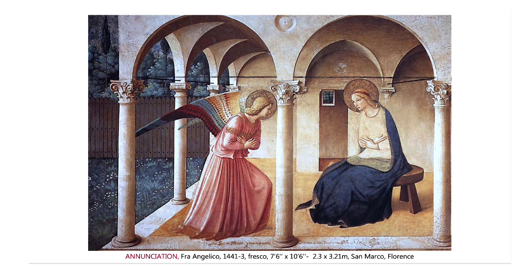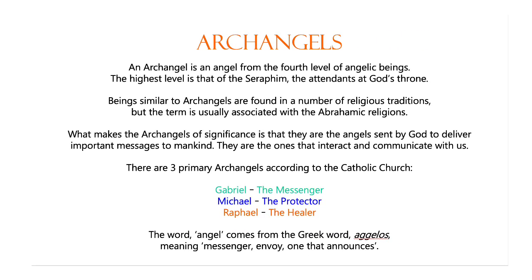So what is an archangel? They're not the highest level of angel — they're about the fourth level. What makes them so important is that they're messengers to us lowly humans from the divine realm. The highest level of angel are seraphim, and they are the ones that surround God's throne — they're not wasting their time giving us messages, they're looking after God. There are three main archangels in the Catholic Church: Gabriel, who is the messenger and the one in this painting; Michael, who is the protector, the military man; and Raphael, the healer. The word comes from the Greek meaning messenger or envoy.